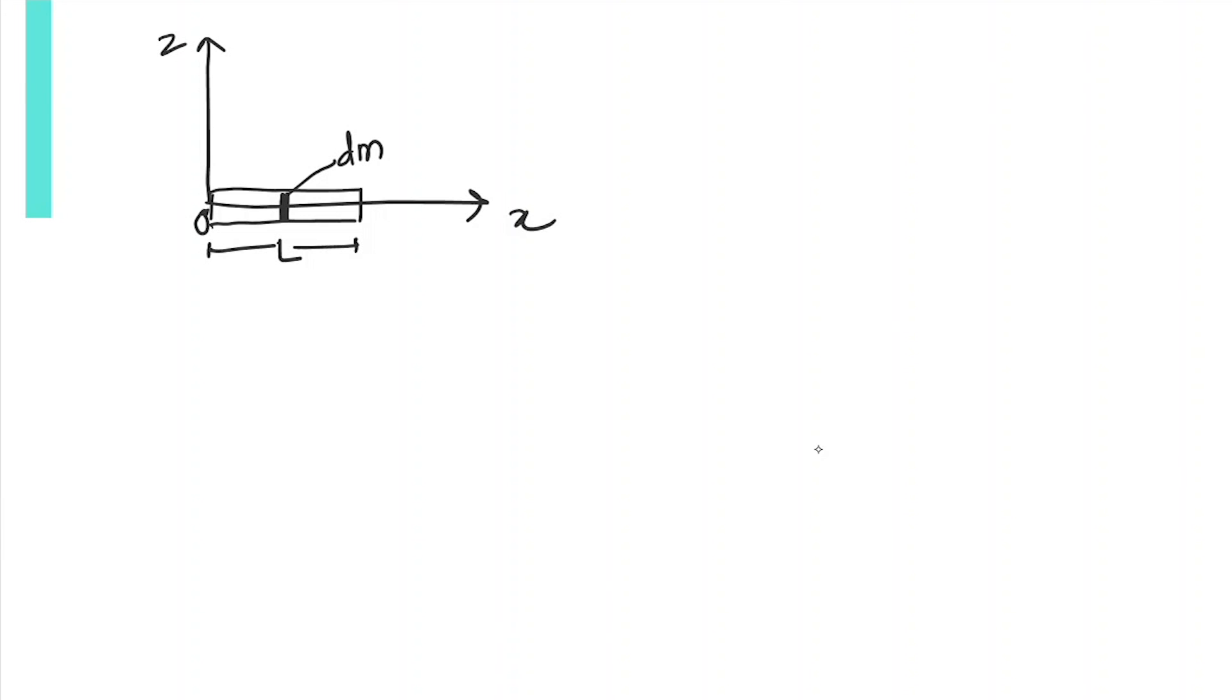How can we find the center of mass? We take the integration of s·dm, integrating throughout the length from 0 to L, then divide it by the total mass. How do we get the total mass? By integrating the small elements dm from 0 to L. First, we need to find dm.